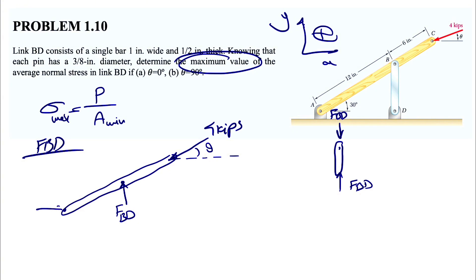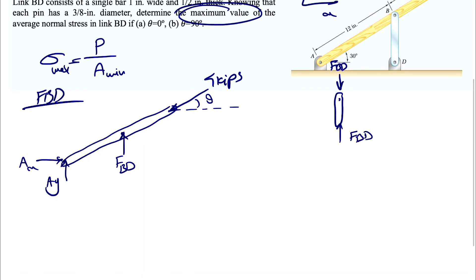Let's define our x and y directions. We have a pin support at point A, which means we have both x and y components — call them A_x and A_y. We'll consider everything positive, and if we get a negative sign at the end, that shows our assumption was incorrect.